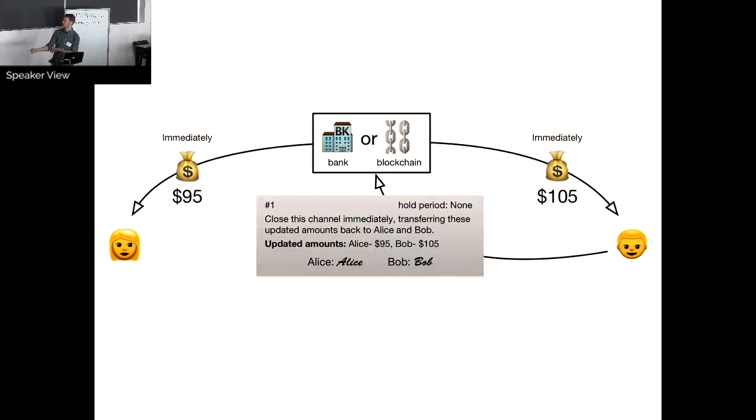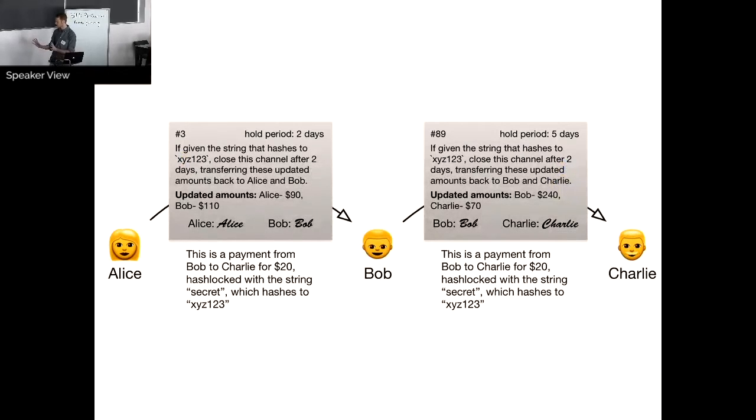And so here you can see two days later they get their money out in the correct amounts. Also they can put the hold period to none. If they both agree they want to close the channel then they skip, they don't have to wait at all. So this is where it becomes a little bit more like Interledger. You could do other things, have different conditions. So for instance, we have a condition here. If given the string that hashes to XYZ123, close this channel after two days transferring these updated amounts back to Bob, or back to Alice and Bob over here.